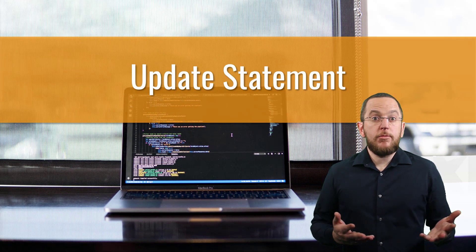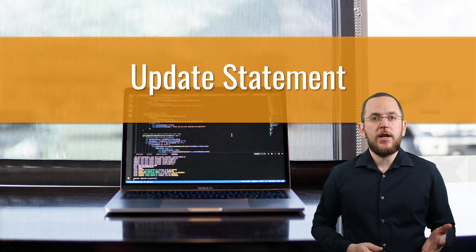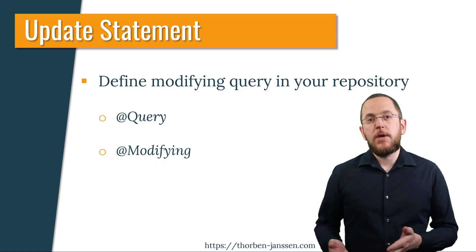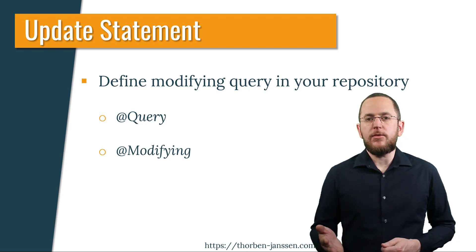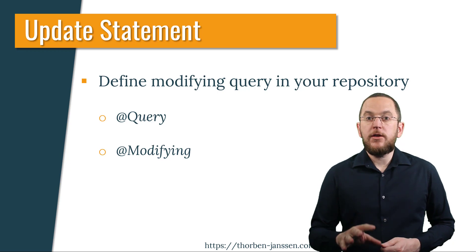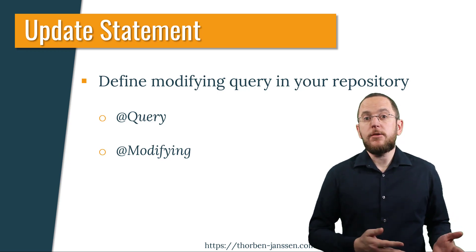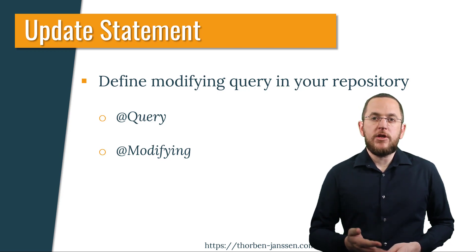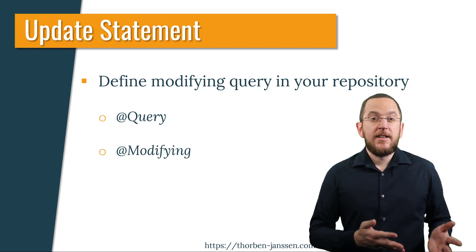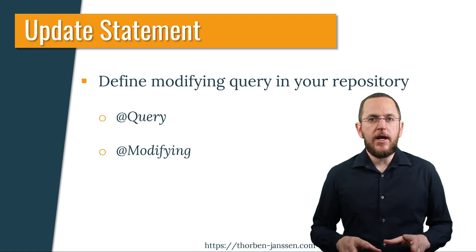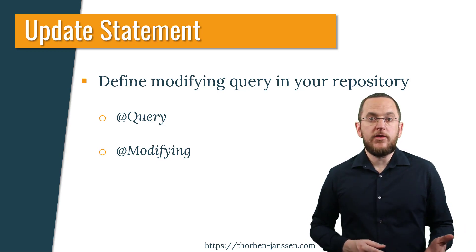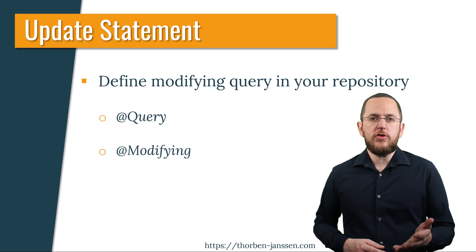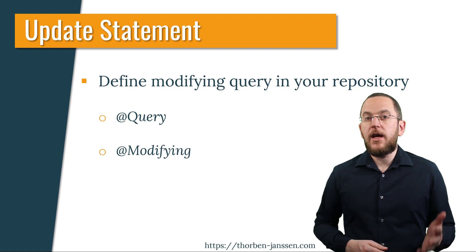If you can define an update statement that performs all the required changes, it's better to define a custom modifying query in your repository instead of activating JDBC batching. Using Spring Data JPA, you can do that by defining a method on your repository interface and annotating it with a @Query and a @Modifying annotation. The @Query annotation enables you to define your own query — I explain that annotation in great detail in my guide to custom queries with Spring Data JPA, linked in the video description. You need to tell Spring Data JPA that you provided a modifying statement by using the @Modifying annotation, which provides the required code to execute your insert, update, or delete statement.